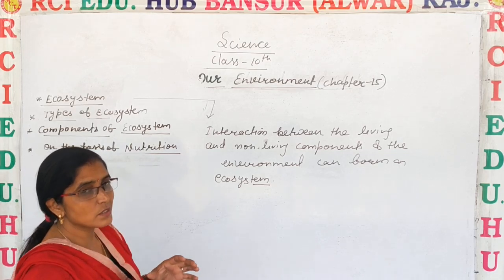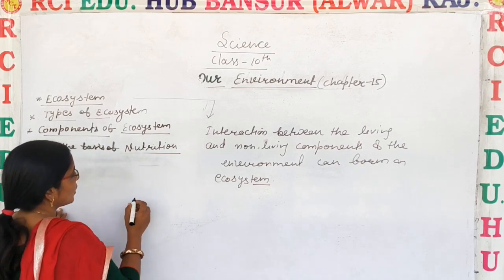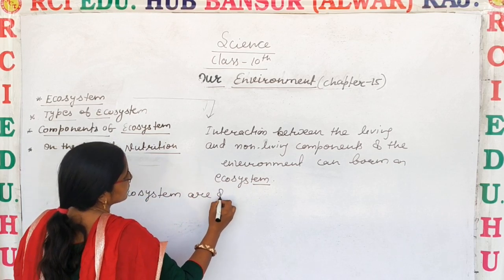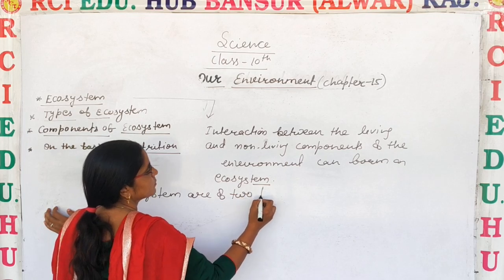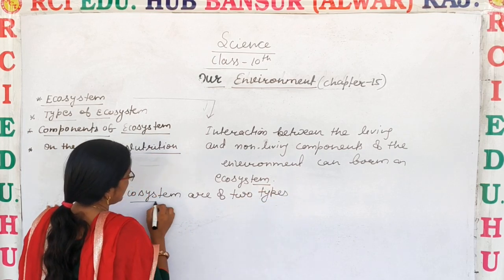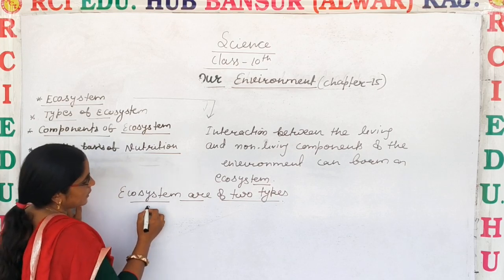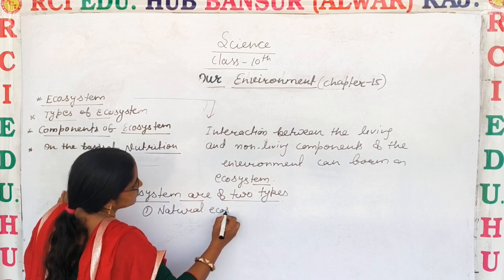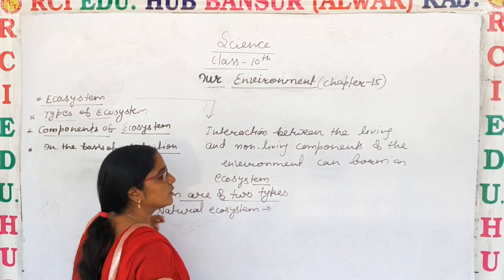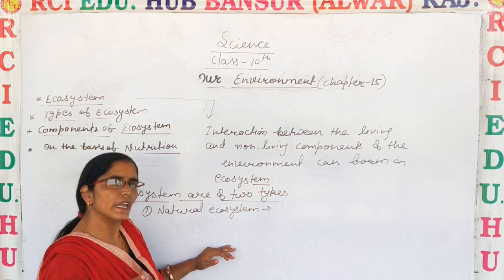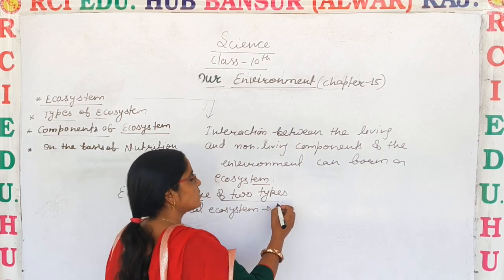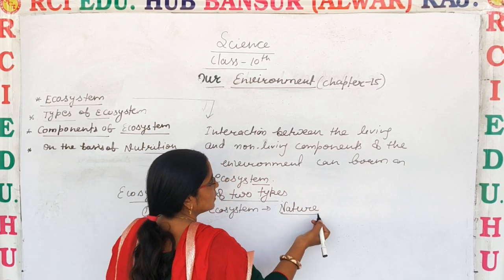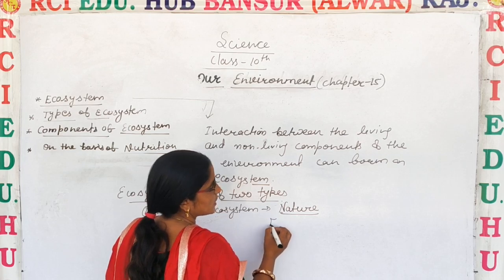Types of ecosystem. Ecosystem are of two types. The first type is natural ecosystem — those ecosystems which already exist in nature. For example: forest, grassland, lake, sea.